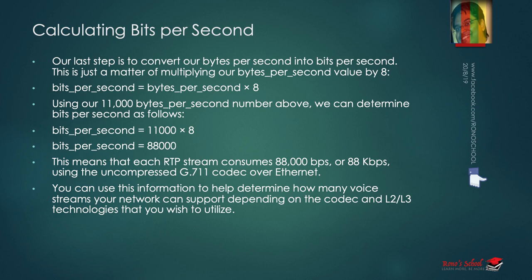You can use this information to determine how many voice calls your network can handle. If you need a minimum of 88 kbps per call, and you know how many simultaneous calls you have, you can design your network accordingly. For 20 users you might need 100 Mbps; for 200 users you might need 10 Gbps — and so on. That is how you design your network based on these calculations.